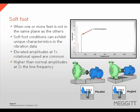Soft foot is a condition that occurs when one or more of the machine feet are not in the same plane as the others. Soft foot will create an elevated 1x rotational speed vibration and a higher than normal amplitude at 2x line frequency if it is on a motor. This elevation in 2x line frequency is created when the soft foot is tightened and the foot pulls on the case, creating case distortion.